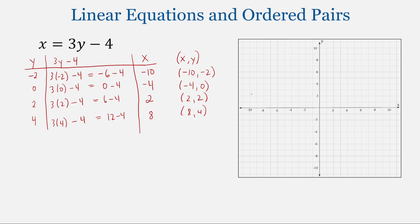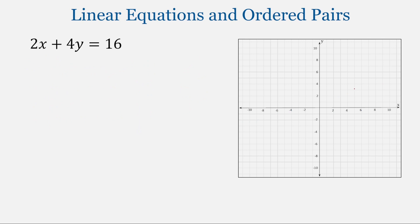Plotting those points — (−10, −2), (−4, 0), (2, 2), and (8, 4) — gives us the line for the equation x = 3y − 4. Throughout this unit, we will look at many different ways to graph linear equations, but if you ever forget a particular method or are not sure, you can always go back to creating ordered pairs, plotting those points, and connecting the dots to generate the line.